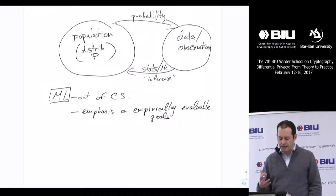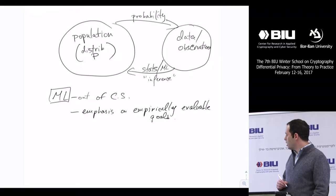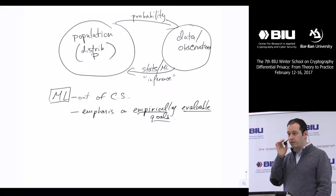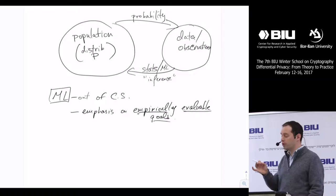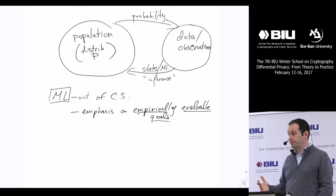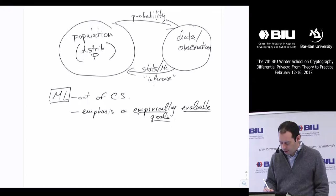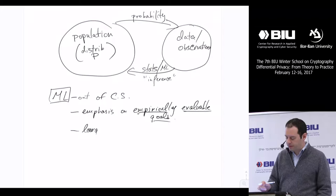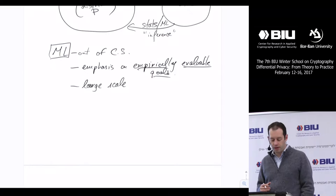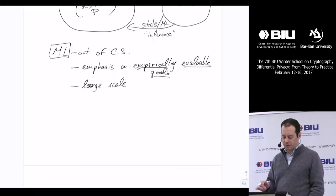Machine learning came out of computer science. The thing that distinguishes machine learning from statistics, culturally, is really an emphasis on goals that can be evaluated empirically — things like misclassification rates and prediction. By and large, the focus of most work in machine learning is prediction. At a machine learning conference, the focus is on accomplishing tasks where it's possible to take a fresh dataset and check how well you did. There's also a lot of emphasis on large-scale problems — large dimension, or more significantly, lots of data, what statisticians would call large N.